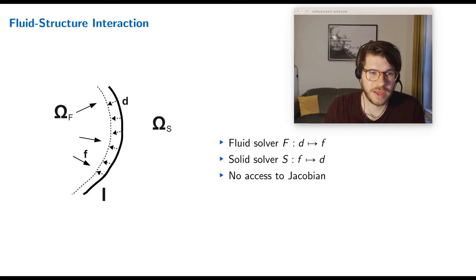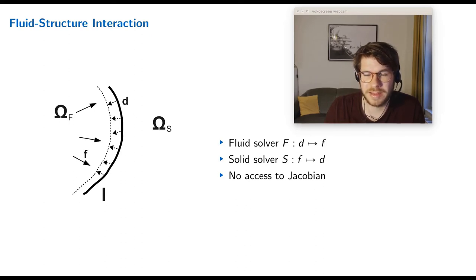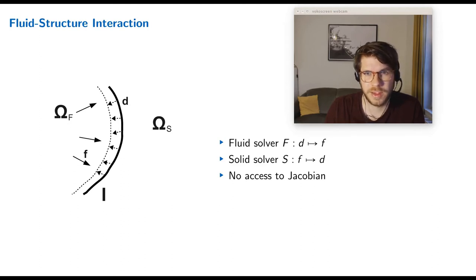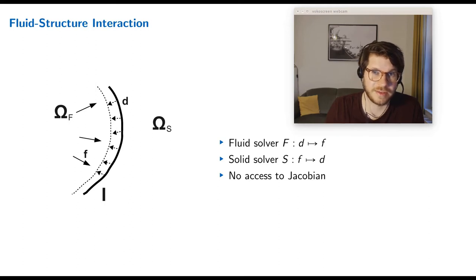As an example I want to use fluid-structure interaction. On the left you see a fluid domain with a fluid solver; on the right a solid domain with a solid solver. We do a black-box coupling — the fluid solver is a black-box operator F that gets displacement values at the coupling interface as input, computes one time step, and returns forces at the coupling interface. The solid solver does the opposite: it gets forces as input and computes displacements. Importantly, we do not have access to the Jacobian of these operators, because that would require discretization details of the solvers.